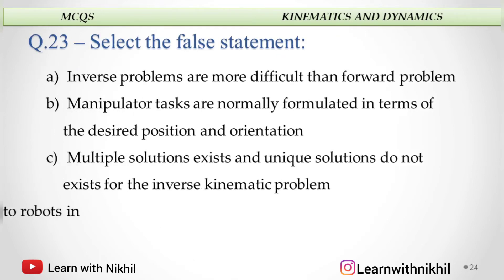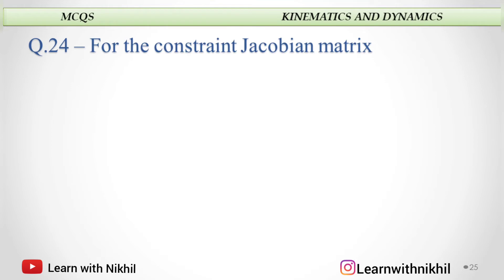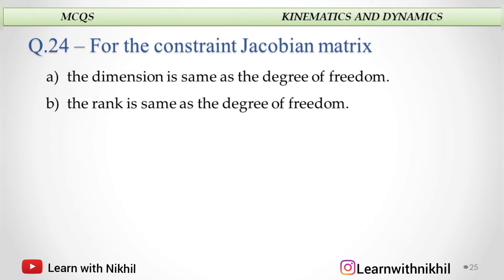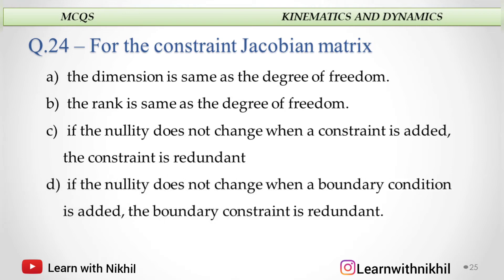Select the false statement. The false statement is: multiple solutions exist and a unique solution does not exist for the inverse kinematic problem — similar to the previous questions. For the constraint Jacobian matrix: the rank is the same as the degree of freedom. If the nullity does not change when the constraint is added, the constraint is redundant. The answer is C.